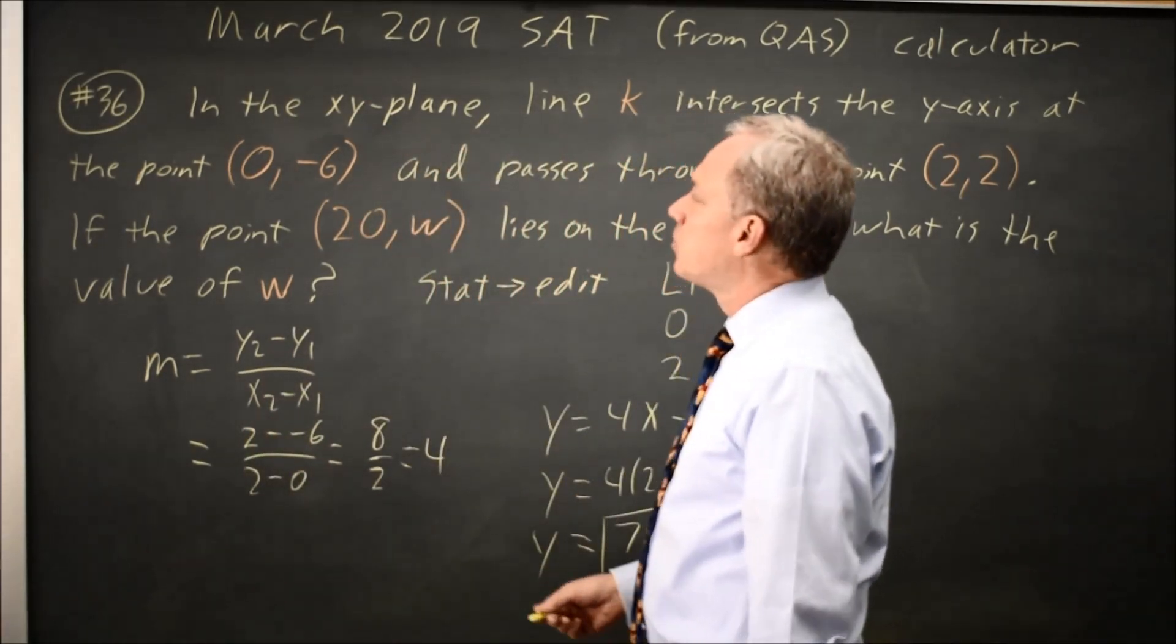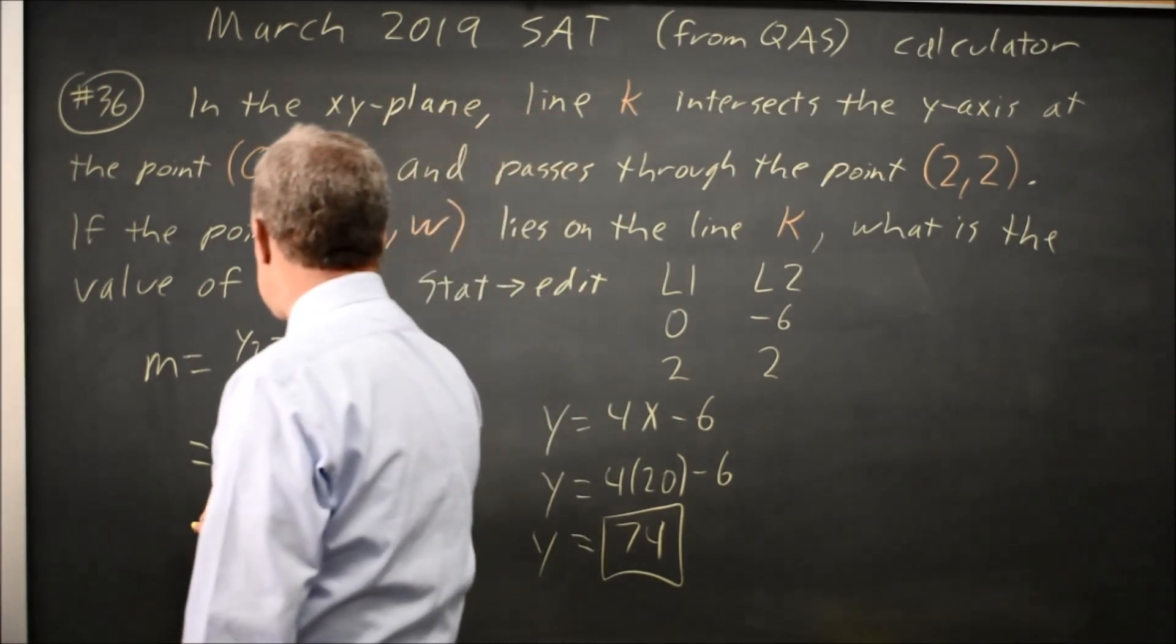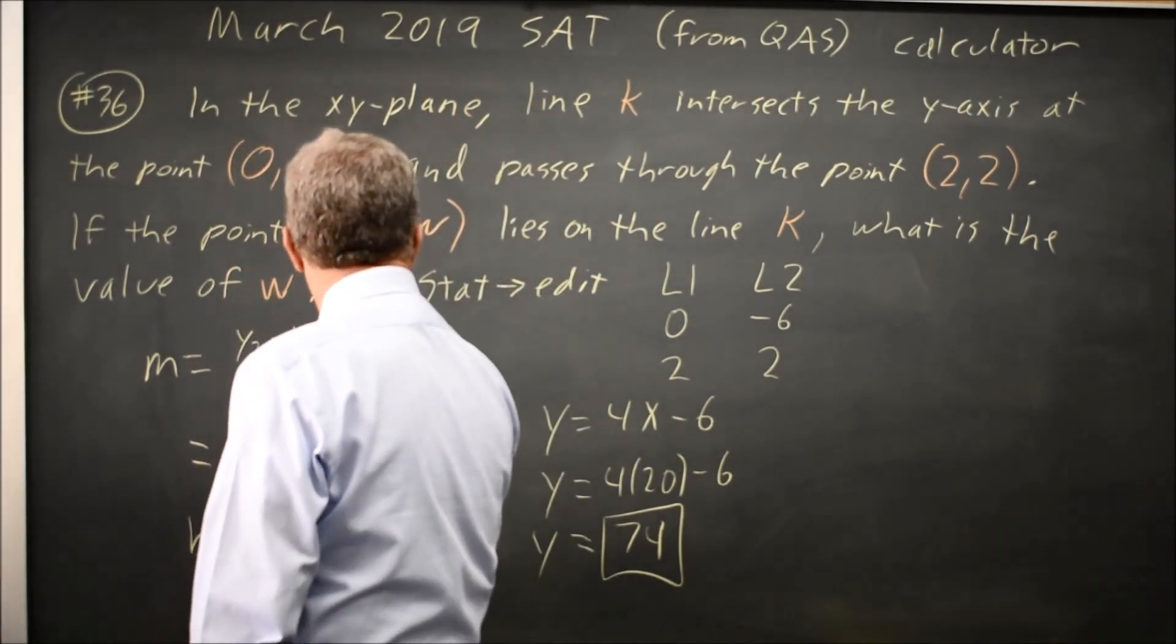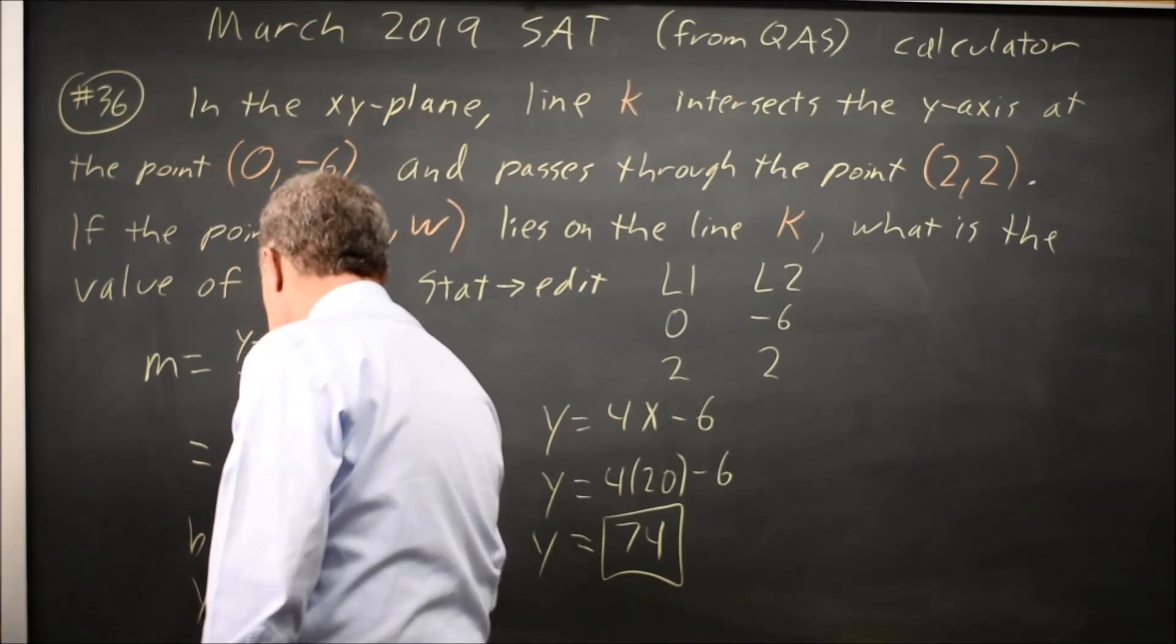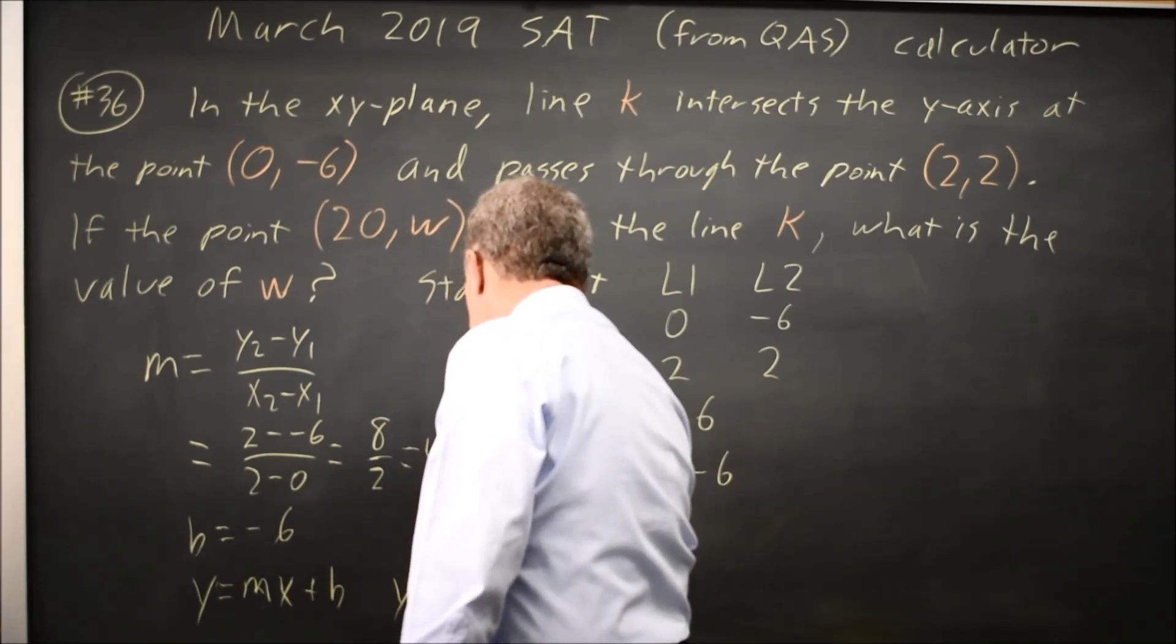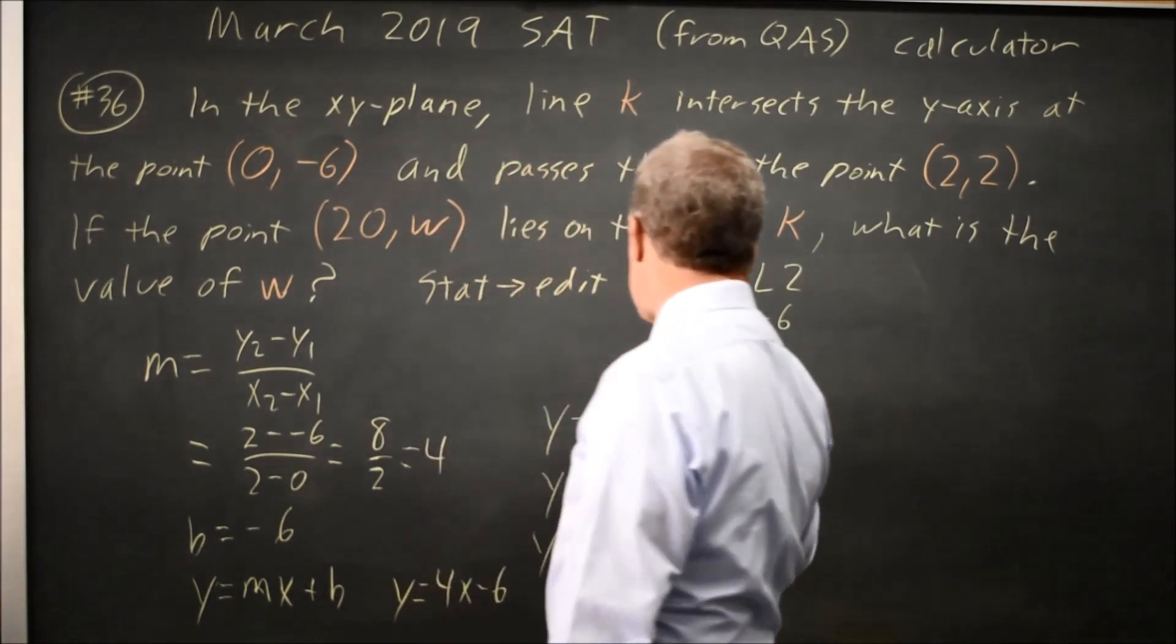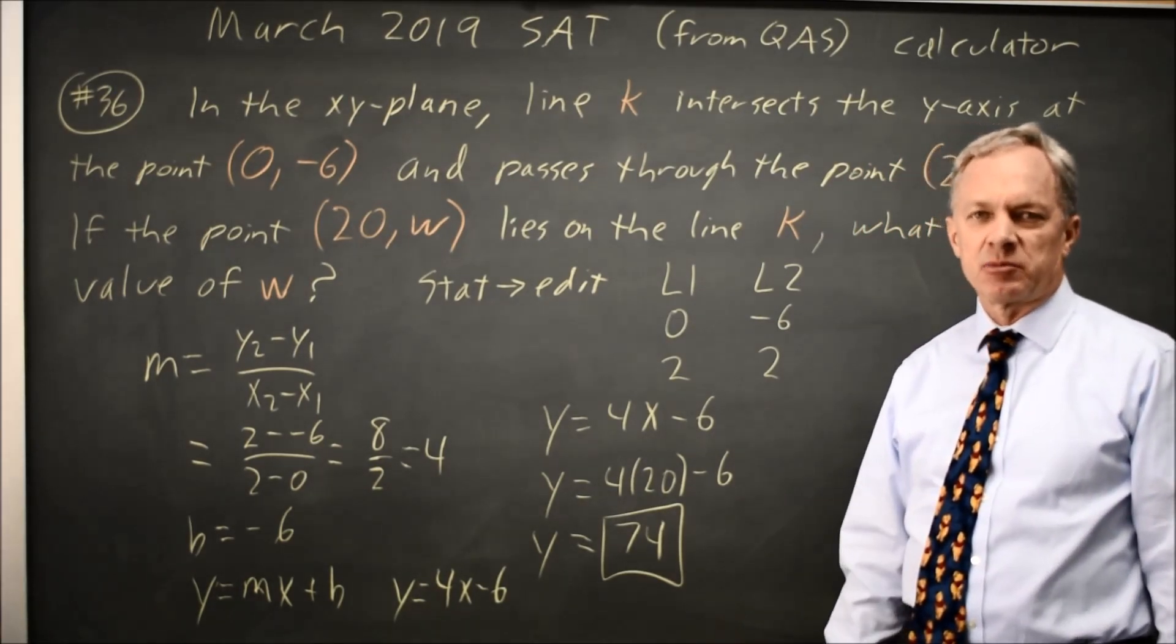My y-intercept is given in the question when x equals 0, y equals negative 6. So in y equals mx plus b I get y equals 4x plus negative 6 which is the same equation I found here and from there I can finish it by hand just as I did before.